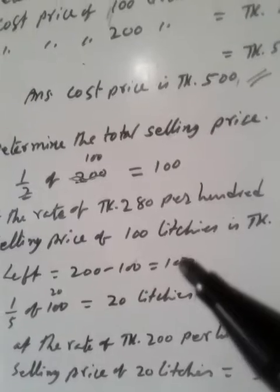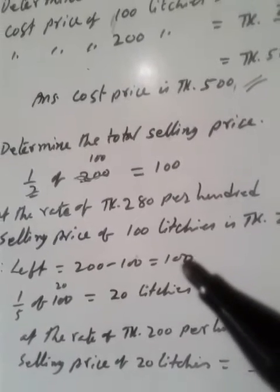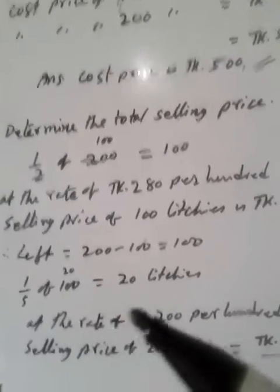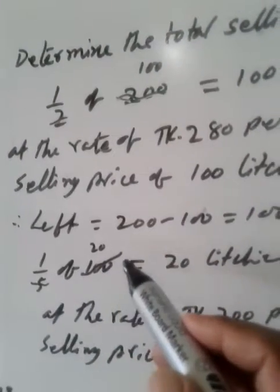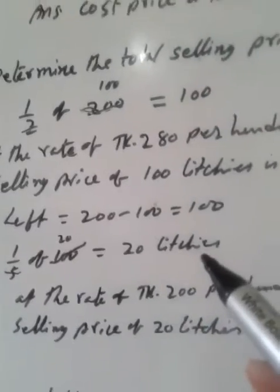One-fifth of remaining litchis means one-fifth of 100. One-fifth of 100, if we divide by 20, then 20 litchis.